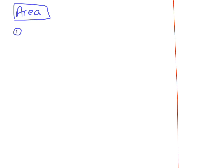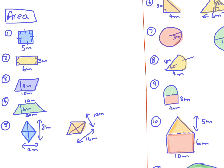Just a quick run through on area for the shapes we have looked at. The first one is a square, so the area of a square is base times height, or side times side, or side squared. One side is 5, and the other side will also be 5 because they are equal, so it ends up being 5 times 5.